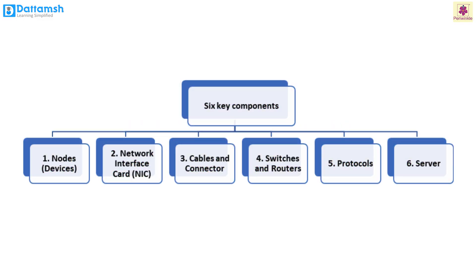Now let's understand how networks actually work. To truly understand this, it's important to first learn about the six key components that make a network function: Network Interface Card (NIC), cables and connectors, switches, routers, protocols, and servers. Let's look at each one of them.